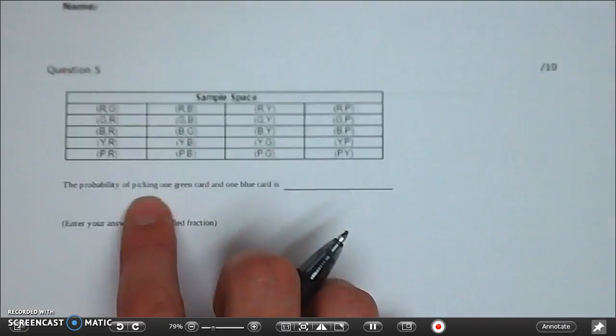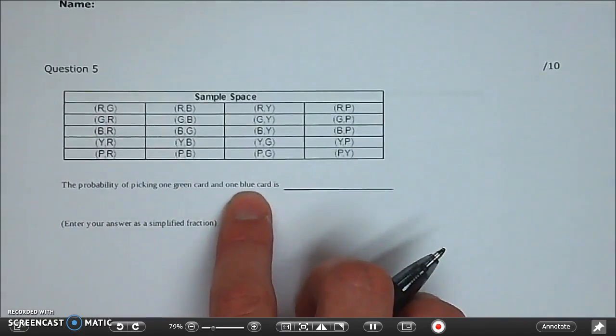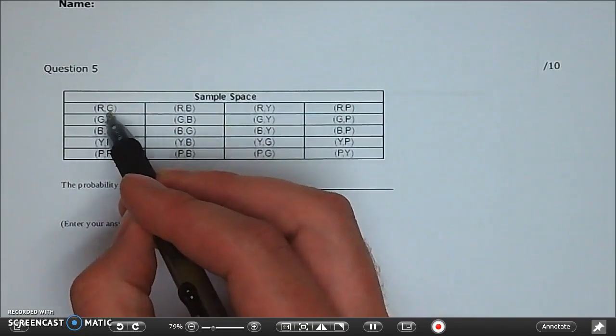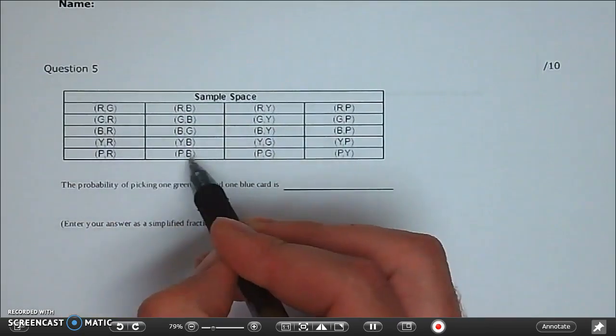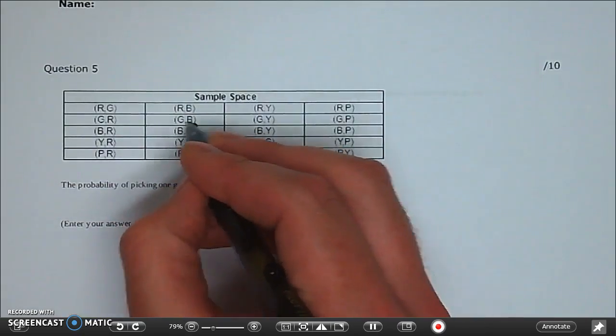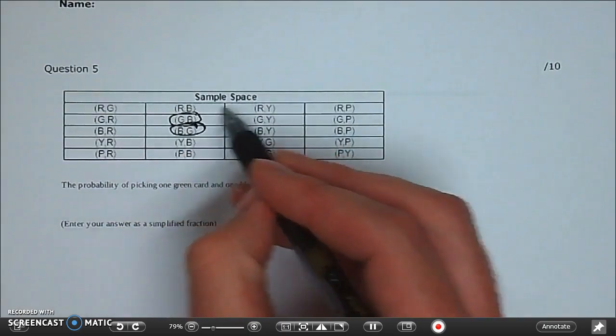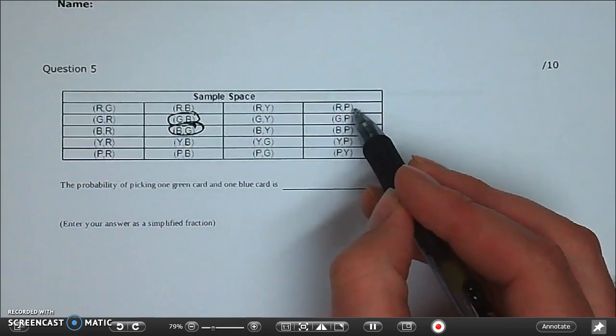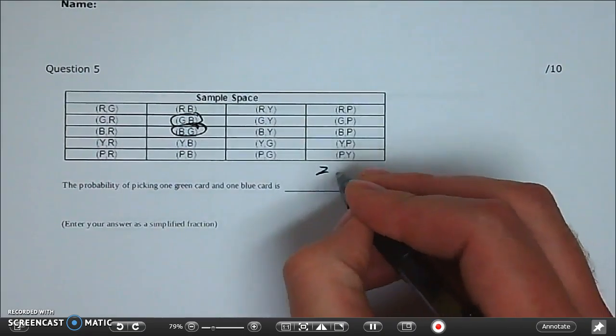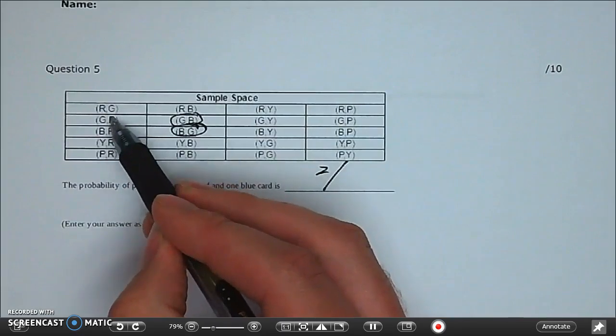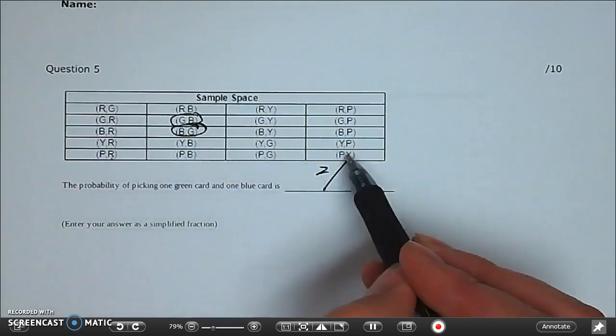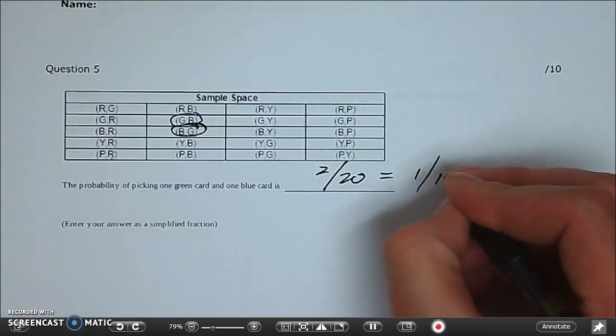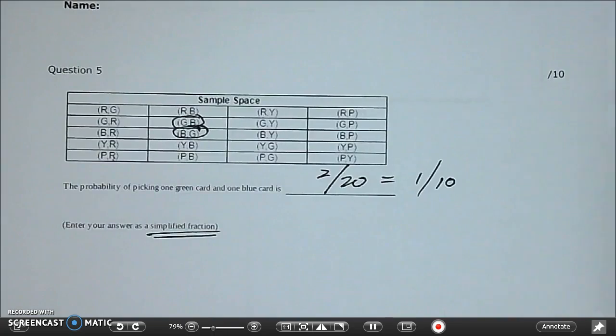Question five. Probability of picking one green card and one blue card. So we need one green and one blue. We gotta look carefully. One green one blue. You're looking for G and B or B and G. One green one blue. That's a green and blue. One green three four five times one two three four. Two out of twenty which reduces to one over ten. That's the simplified fraction. Make sure you simplify that.